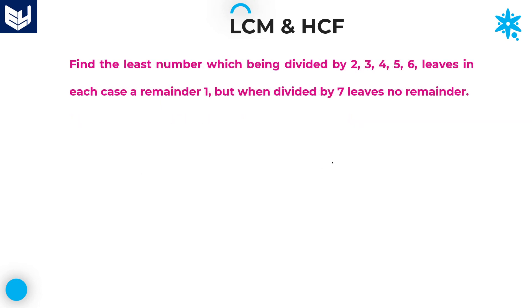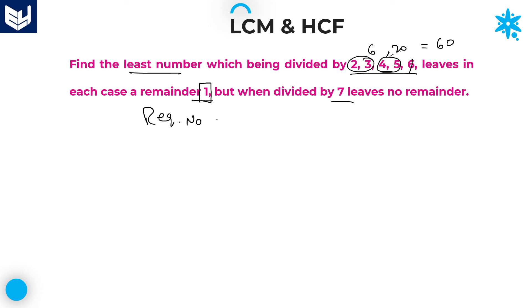Let's move on to the next question. This is a similar model to the previous problem. We need to find the least number which when divided by all these numbers the remainder is 1, but when divided by 7 there is no remainder. First calculate the LCM. LCM of 2 and 3 is 6. LCM of 4 and 5 is 20. LCM of 20 and 6 is 60. So LCM is 60. As we want remainder 1, the required number is LCM plus remainder which is 61. Check whether 61 is divisible by 7. 61 is not divisible by 7.